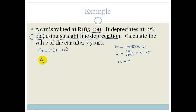Therefore, the amount of money that this car is valued at after 7 years is going to be 185,000 times by 1 minus 0.12 times by 7, and I'm going to put those big square brackets around.